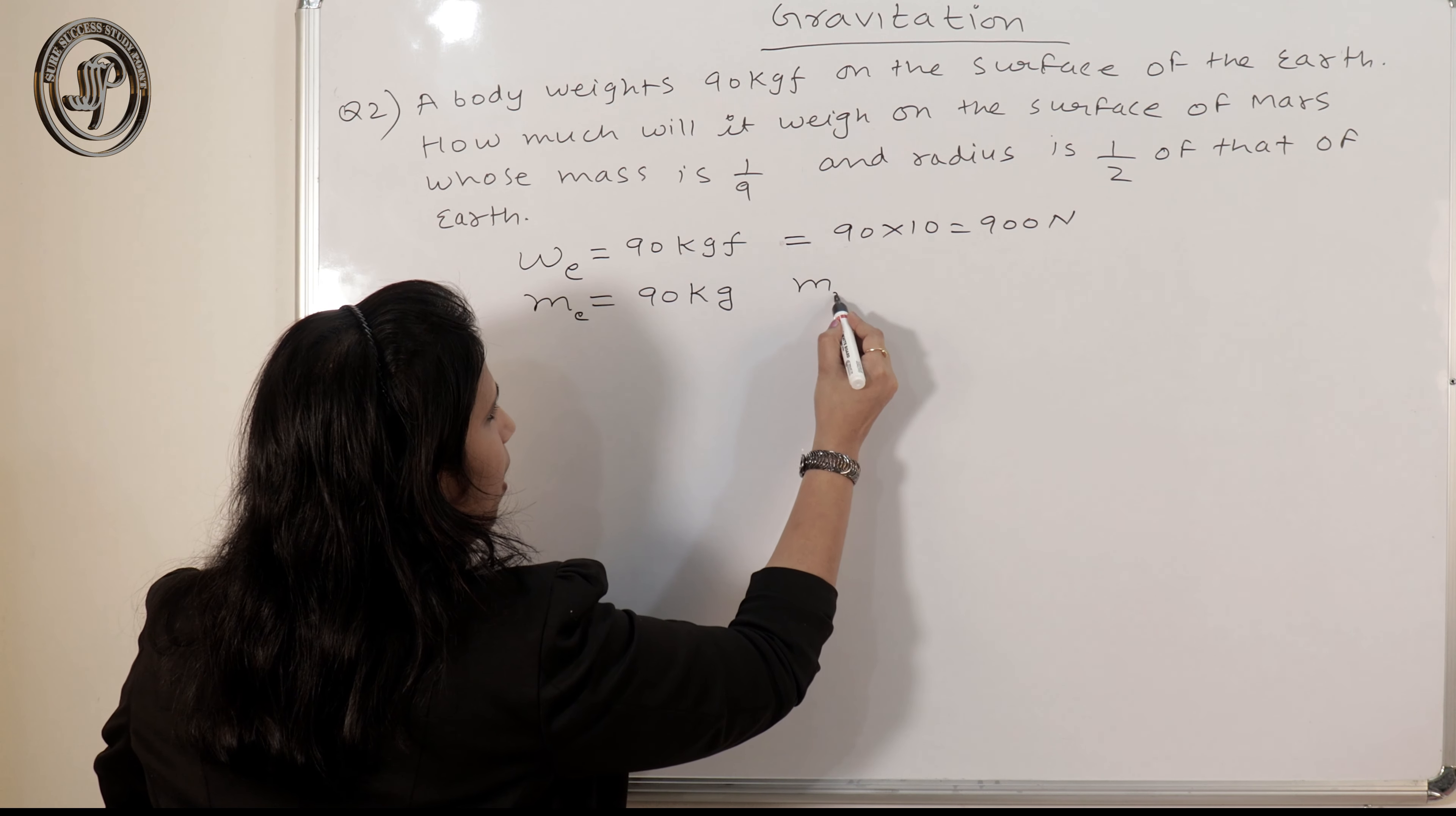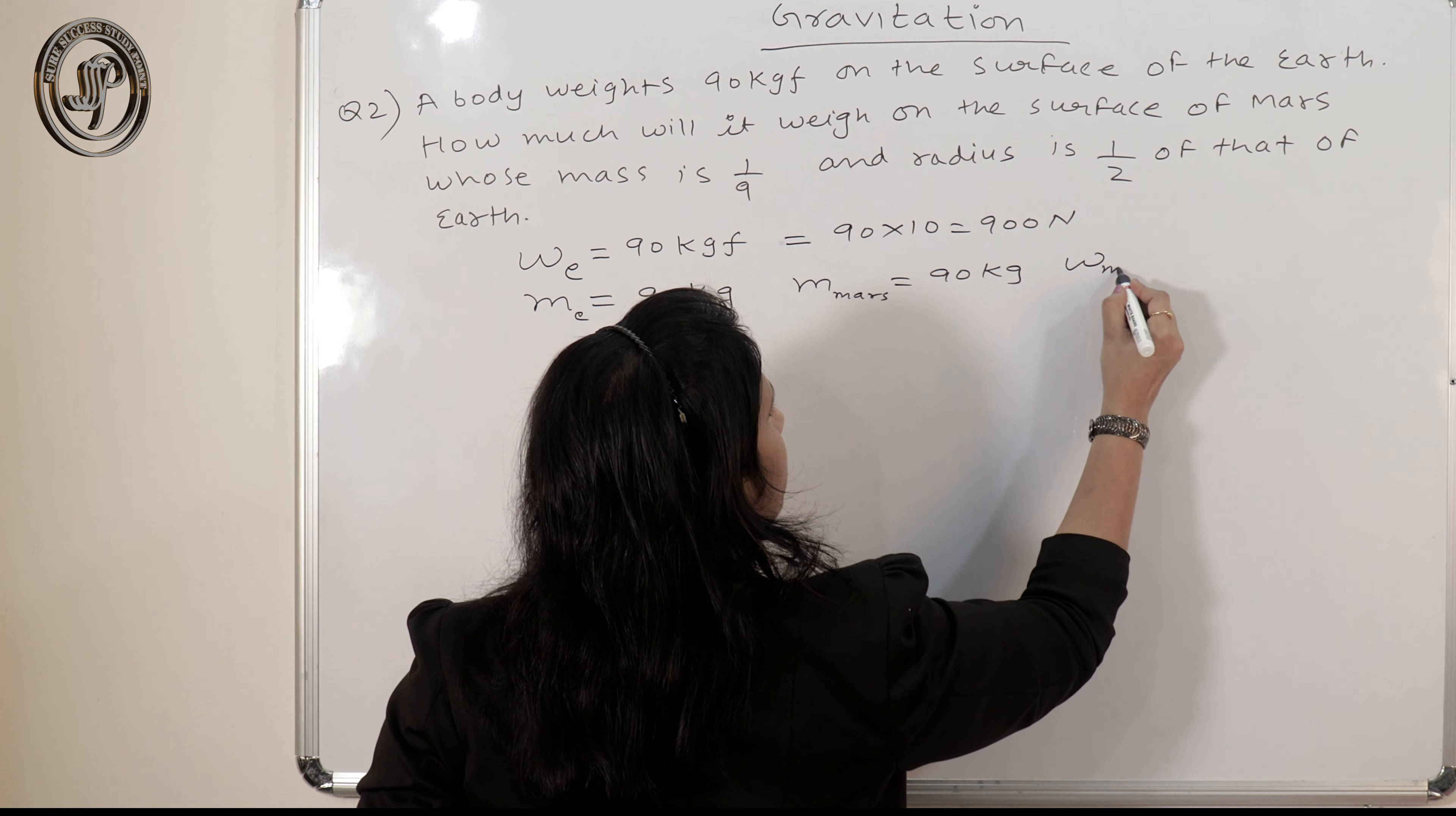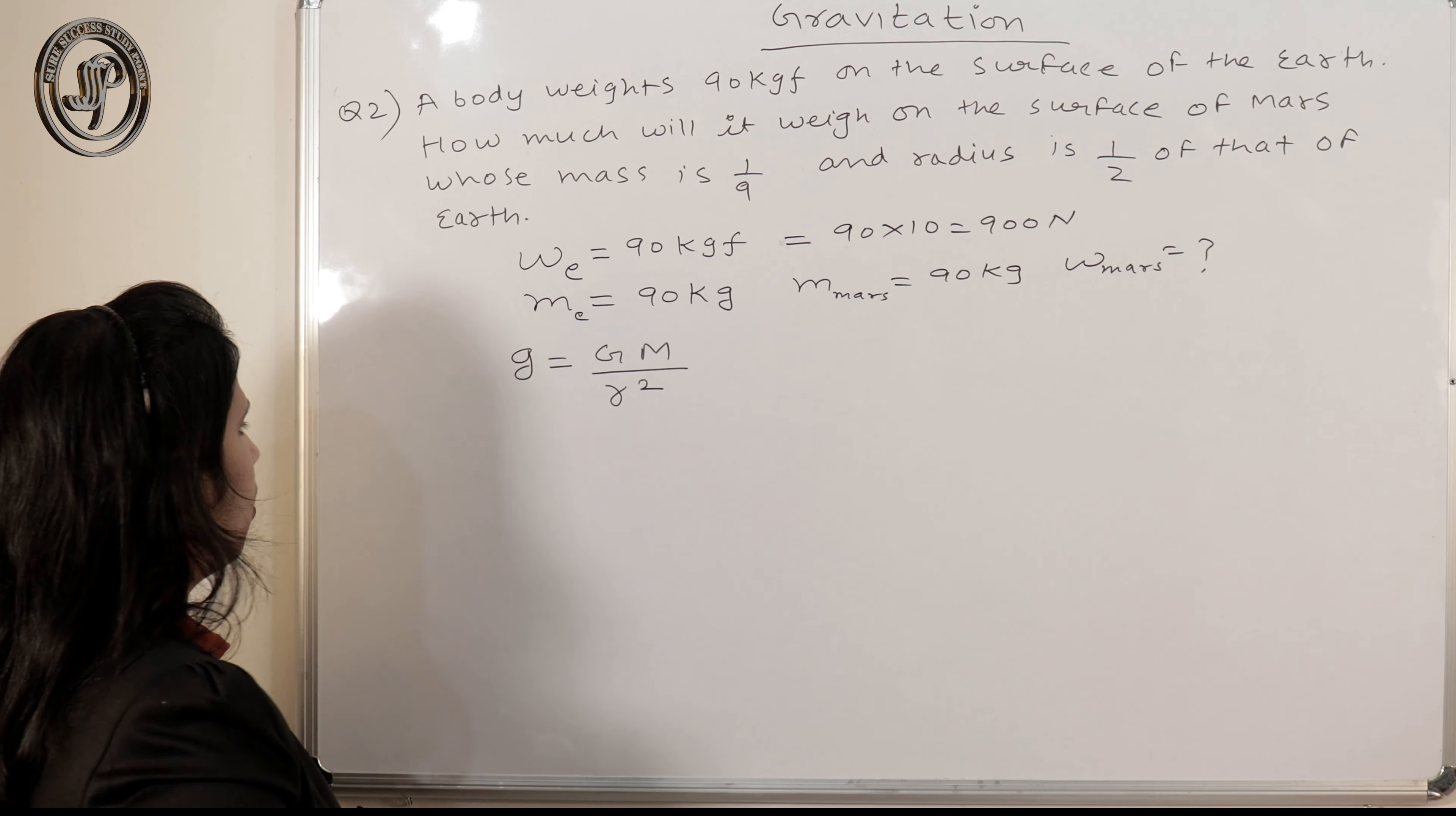If you ask what is the mass on the surface of Mars, mass will remain 90 kg, because mass is a scalar quantity, it will never change. So what do we need to calculate in this question? Weight on the surface of Mars. That we need to calculate. So we have a formula, g equal to Gm by r square. We have this formula.